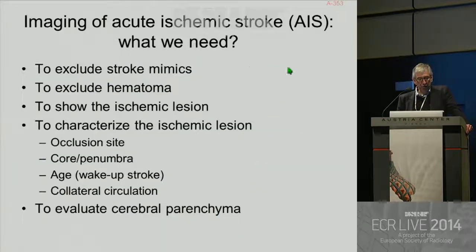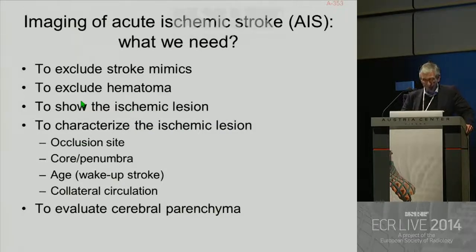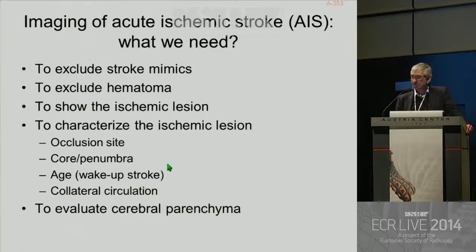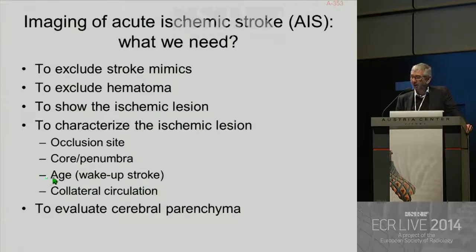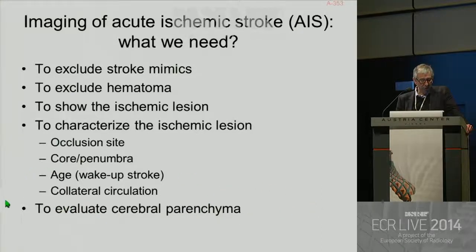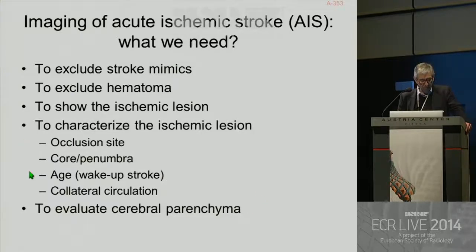Imaging of acute ischemic stroke — what do we need? We need to exclude stroke mimics, to exclude hematoma, to show the ischemic lesion, to characterize the ischemic lesion, where is the occlusion site, to differentiate core from penumbra, to determine the age of the stroke lesion — singularly in wake-up stroke — and also to analyze collateral circulation. We also have to evaluate cerebral parenchyma, to know if there is leukoaraiosis or microbleeds.